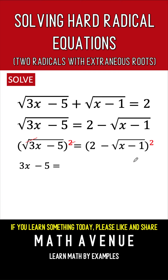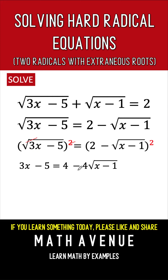But the right side would still contain radicals, because when we square the binomial, the result gives us: the square of the first term is 2 squared, or 4; then twice the product of the first and second terms, which is 2 times 2 times the square root of x minus 1, giving 4 times the square root of x minus 1; we copy the minus sign; then we square the second term, which eliminates the square root, giving us x minus 1.